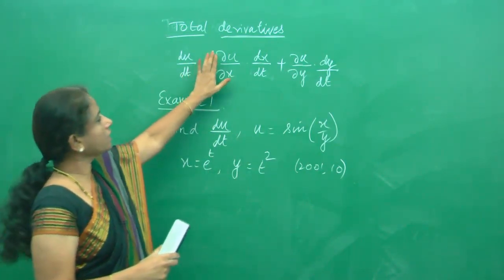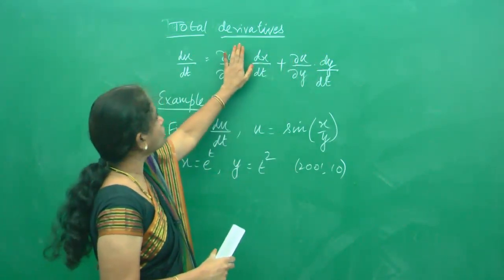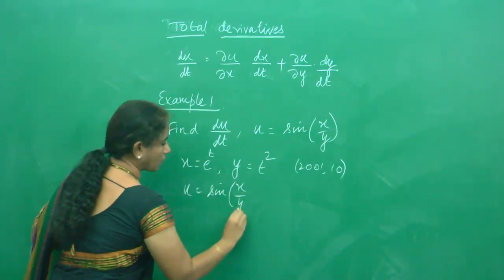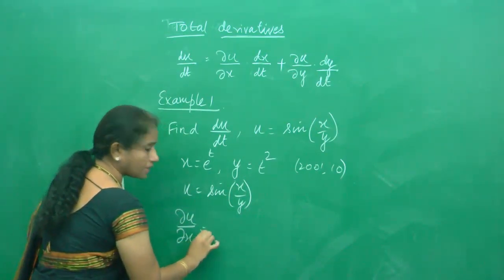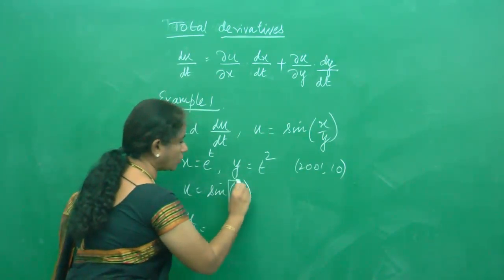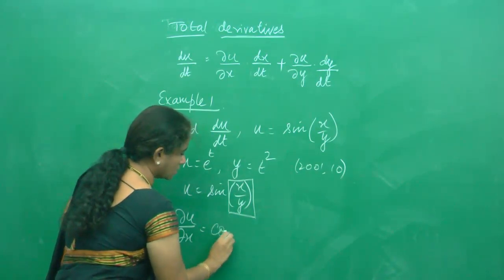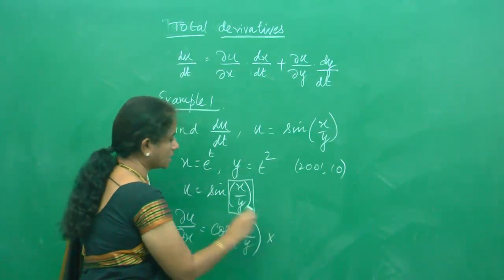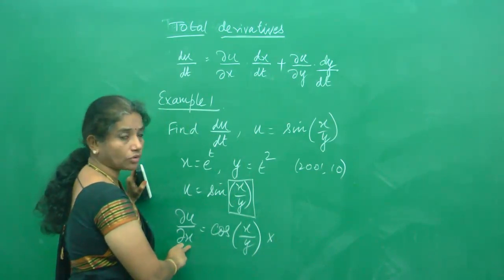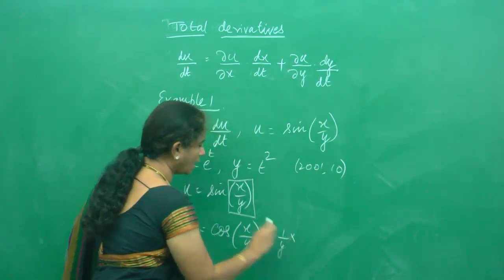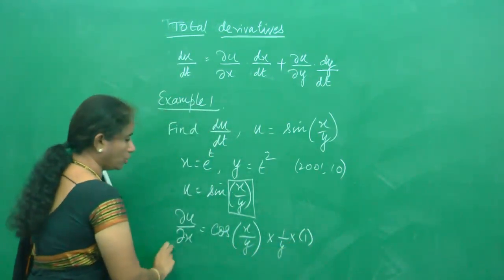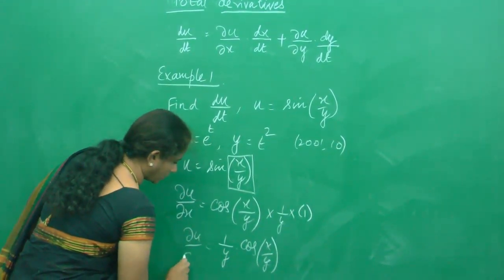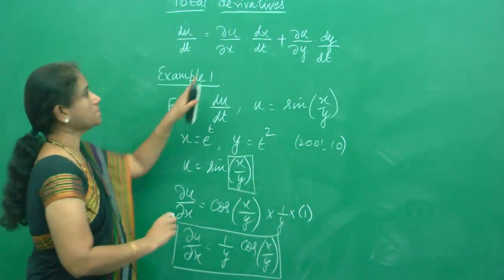Let us start with the formula and find each part separately. First, let us do ∂u/∂x. Since u = sin(x/y), the derivative of sin is cos, so we get cos(x/y). Then we apply the chain rule: differentiating with respect to x, y is treated as a constant, so the derivative of x/y with respect to x is 1/y. Therefore, ∂u/∂x = (1/y) cos(x/y).